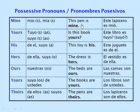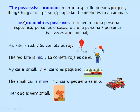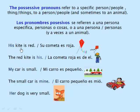Mine — this thing is mine. Yours — is this book yours? His — this toy is his. Hers — the dress is hers. Ours — the beds are ours. Yours — the books are yours. Theirs — the pens are theirs. The possessive pronouns refer to a specific person or people and their things. His kite is red; the red kite is his.